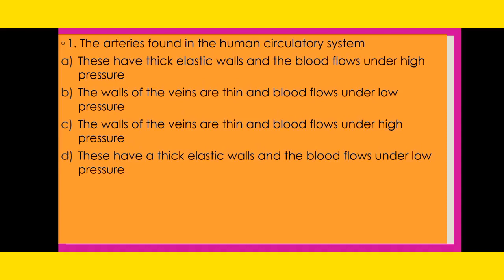Our first question: The arteries found in the human circulatory system — Option A: These have thick elastic walls and the blood flows under high pressure. Option B: The walls of the veins are thin and blood flows under low pressure. Option C: The walls of the veins are thin and blood flows under high pressure. Option D: These have thick elastic walls and the blood flows under low pressure. The right option is A — these have thick elastic walls and the blood flows under high pressure.